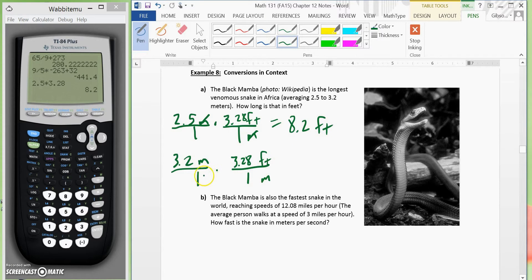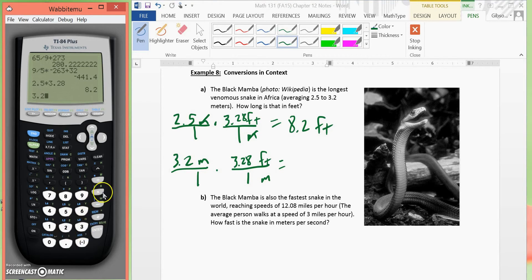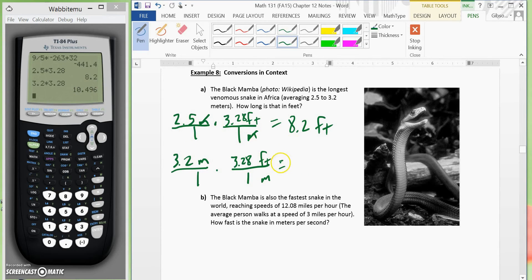Now, we would take 3.2 and multiply it by 3.28. That will give us, we'll round this to one decimal place. That will give us approximately 10.5 feet. And these are the two lengths for the black mamba.